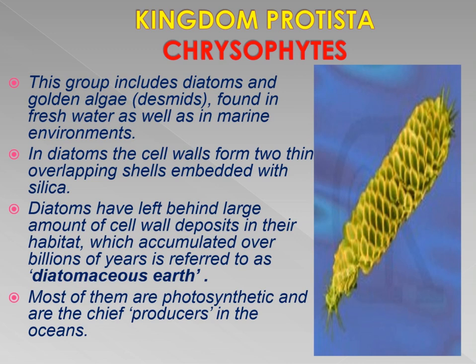The cell wall deposits of diatoms, embedded by silica in two thin overlapping shells, have been deposited over billions of years forming diatomaceous earth. Most of them are photosynthetic and are the chief producers in the oceans. As they are able to produce their own food, they are autotrophic. This is the whole concept of chrysophytes — the first type of organism in Kingdom Protista.